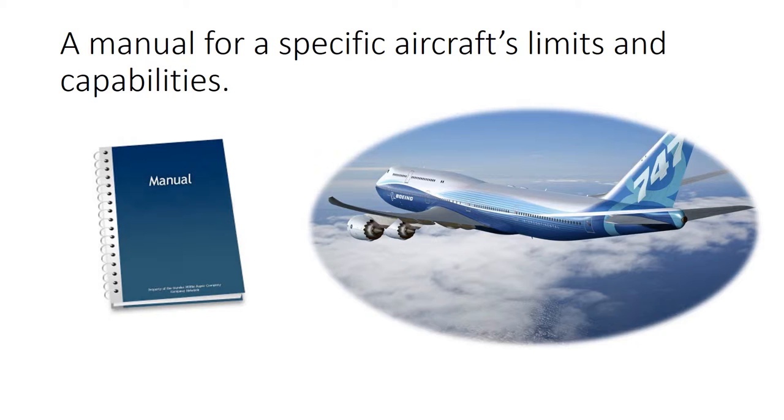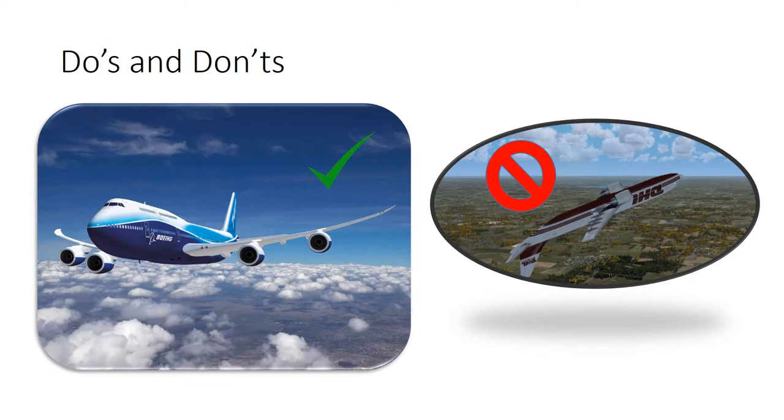This is where the flight envelope comes in. The flight envelope is a manual which contains the flight capabilities of a particular airplane. Its purpose is to serve and educate the pilots in better understanding the capabilities of this specific airplane that they intend to fly. In other words, it contains the do's and don'ts of flying that particular airplane.